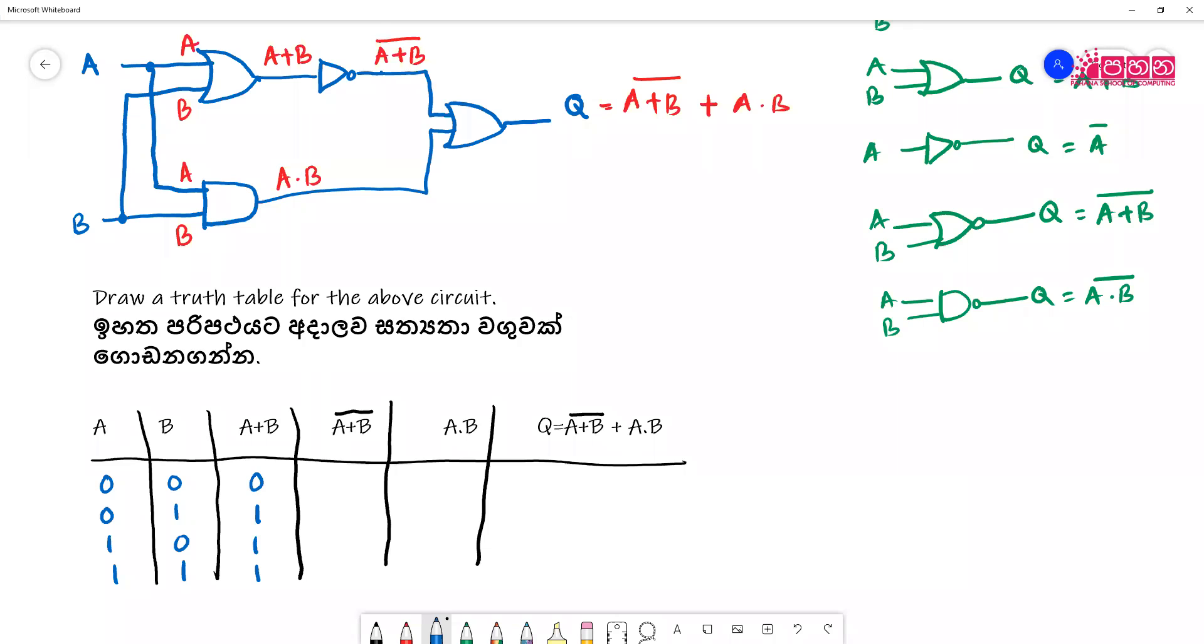So we will have zero plus zero is zero, zero plus one is one, one plus zero is one, one plus one is one. A plus B is zero, one, one, one.